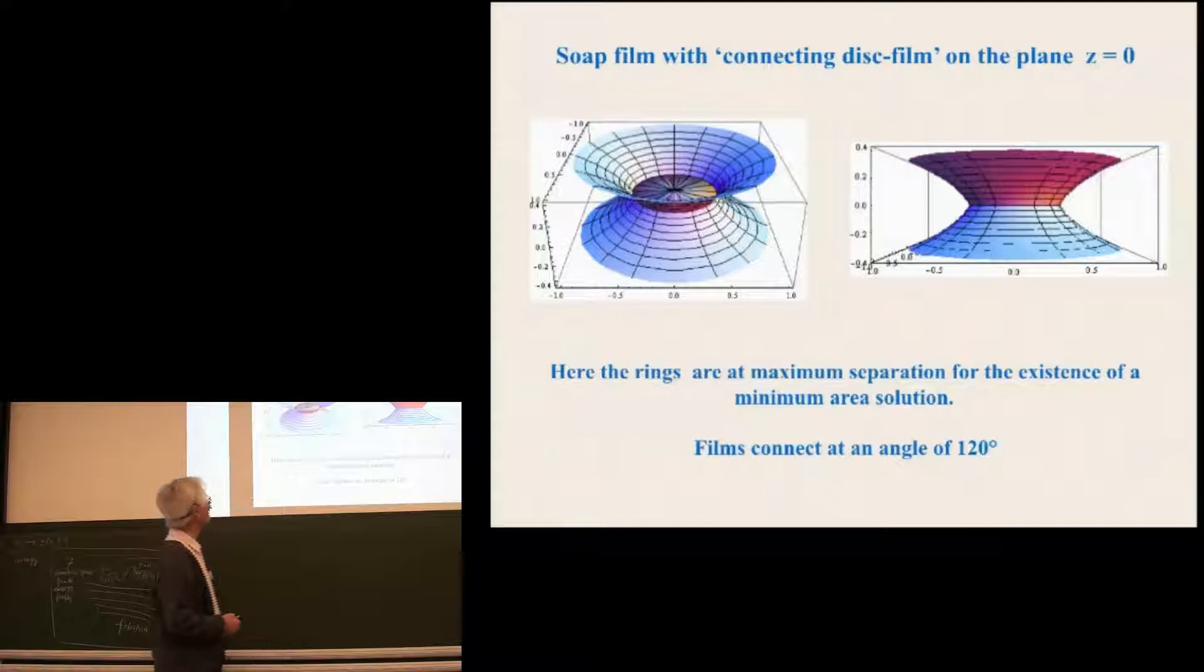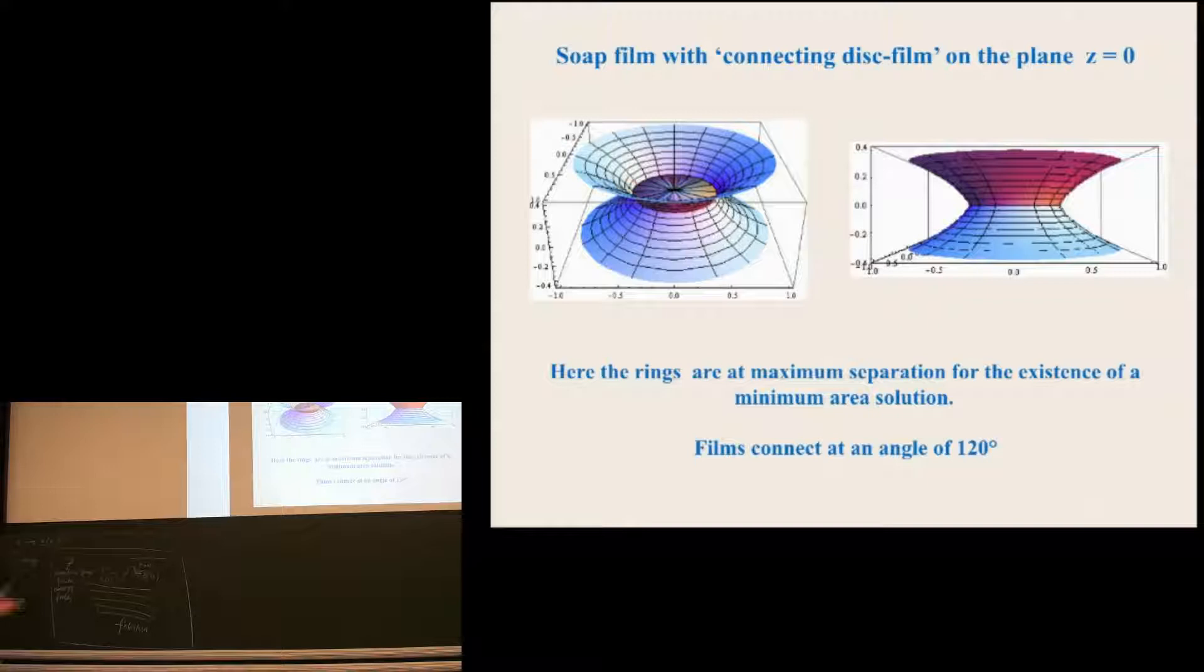You can also consider soap films that have a connecting film at the centre here. And then you have a triple connection here. So there's a disc film in there as well. And in equilibrium, the three angles have to be 120 degrees for equilibrium. And here the rings are actually at maximum separation for the existence of a minimum area solution.